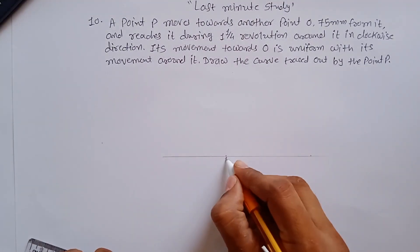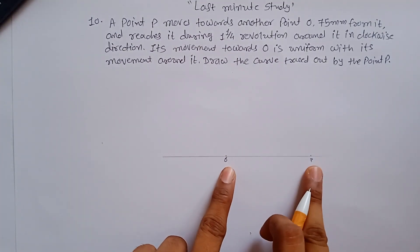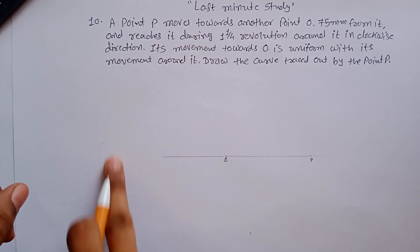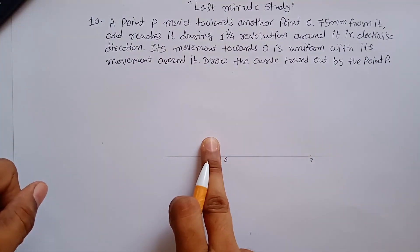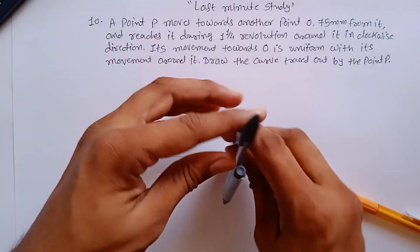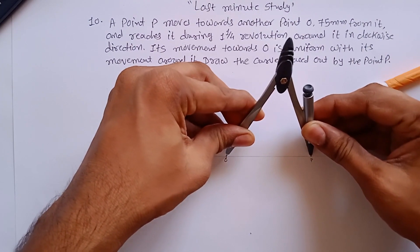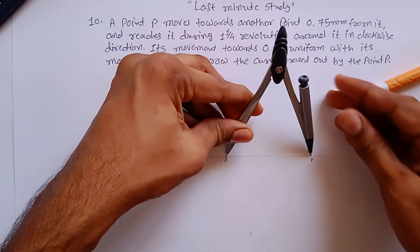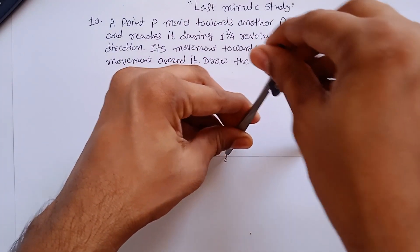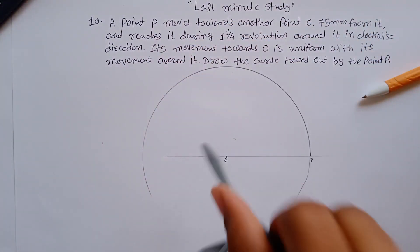This point is O and this is P. P point is trying to reach up to O point by using a curvature. For that, we have to construct a circle with the given radius of 75mm. So you have to construct a circle with 75mm radius like this.